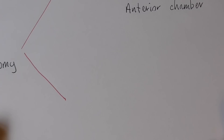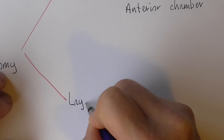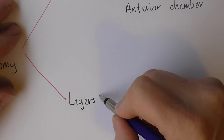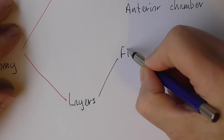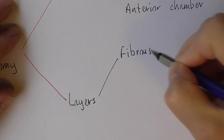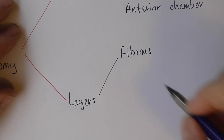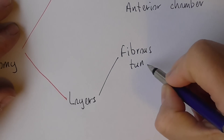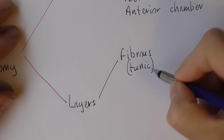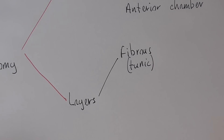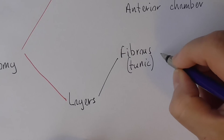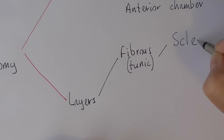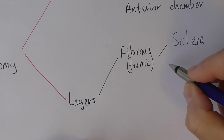Next we come to the layers. The layers in the eye — the outer layer is fibrous. Sometimes the layers are called tunics; tunic just means coat or layer. So the fibrous layer consists of the sclera and the cornea.